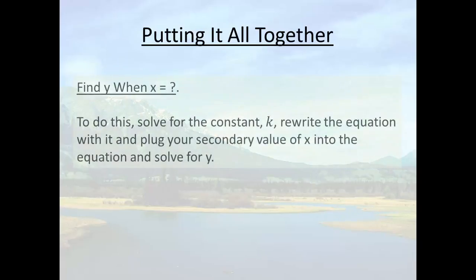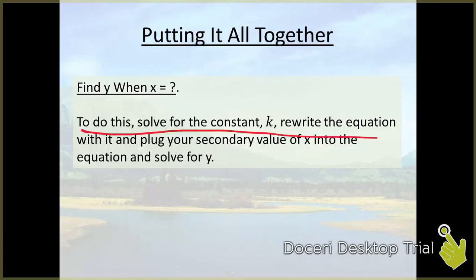They could also give you a problem like this. They want you to find y when x equals a particular number. And that's no different than what we just got done doing except we just take it one more step. So we solve for the constant k. We rewrite the equation which is exactly what we did last time. But then we have to plug in the second value of x and solve for y. So our ultimate answer for a problem like this is going to be y is equal to some number.